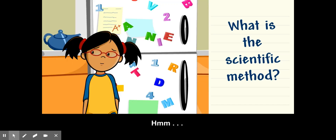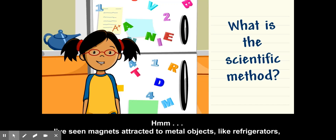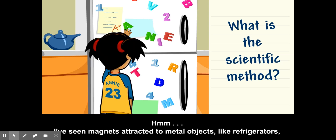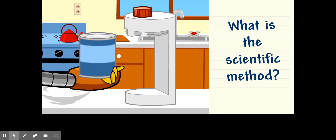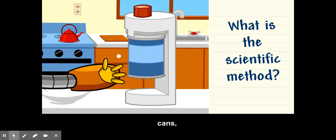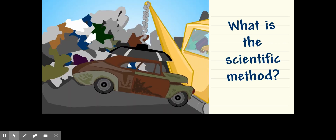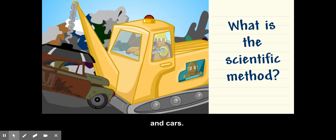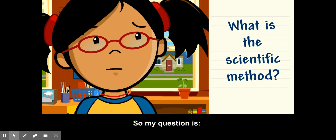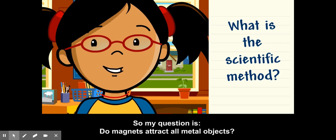The first step is to make observations and think of a question we want to ask. I've seen magnets attracted to metal objects like refrigerators, cans, and cars. So my question is: do magnets attract all metal objects?